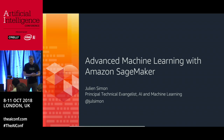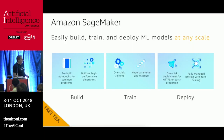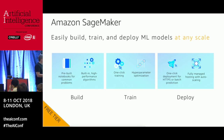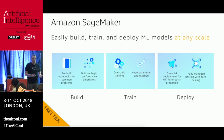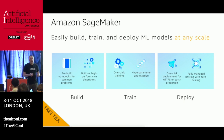There will be lots of demos and notebooks, and I want this to be interactive, so if you have questions, please raise your hand. SageMaker got released at re:Invent last year, so it's just under a year old. It's a managed service for machine learning and deep learning, built to make machine learning accessible to all developers, no matter what their skill level, and without ever managing a single server.